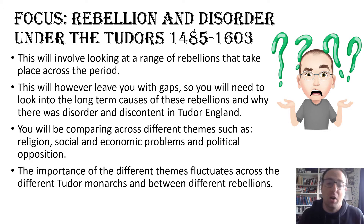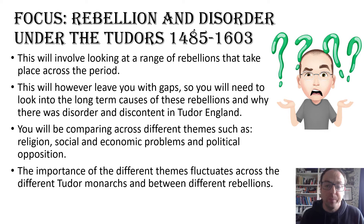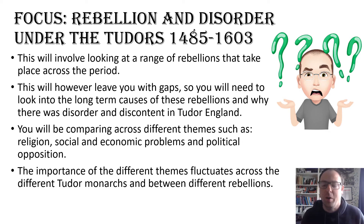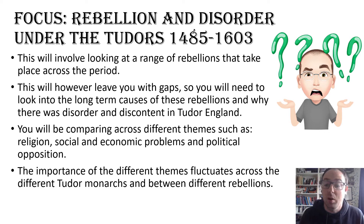We're going to focus on rebellion and disorder under the Tudors, 1485 through to 1603, starting with Henry VII and going all the way through to the end of Elizabeth's reign. This will involve looking at a whole range of different rebellions across the time period. However, there aren't rebellions in every single year, and in those gaps you need to look into long-term causes of rebellions — why there was disorder and discontent in England in a more general way. It can't just be a story of picking out the different rebellions; it has to be an overarching view of why there were rebellions, why there was disorder, why there was discontent in the Tudor world.